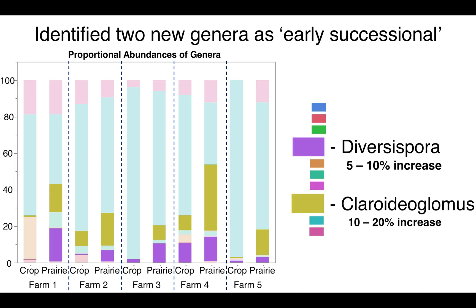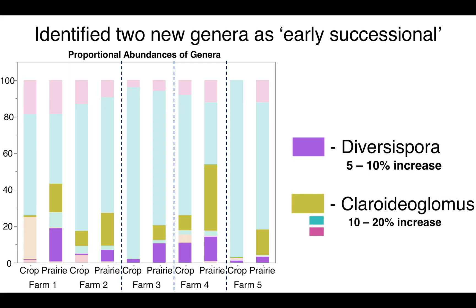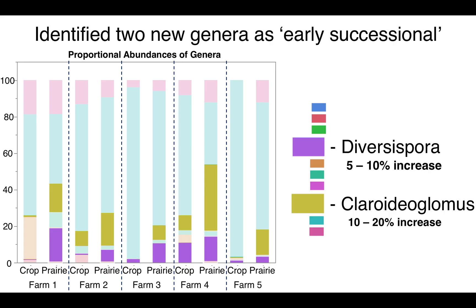I want to highlight this because it's a new discovery. These two genera aren't typically associated with early succession, and I've never seen this reported before, even though it's consistent across farm sites. The ecological significance of these two genera is unclear — why are these genera returning to the community first, and why are they early successional species? This is something I hope to follow up in greenhouse studies, testing differences in species responses to excessive fertilization.